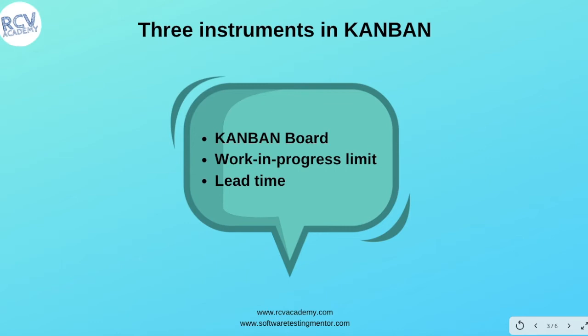There are three instruments in Kanban. The first one is the Kanban board, the second one is work in progress limit, and the third is lead time. These are the three key instruments in Kanban. Let's discuss each of these one by one.